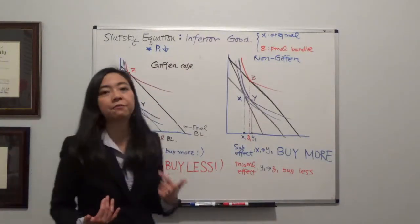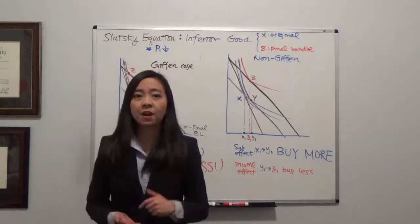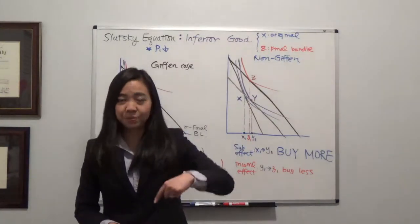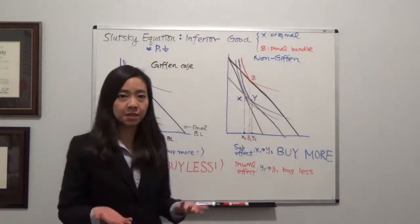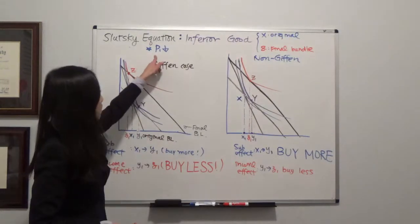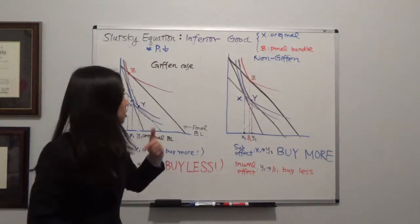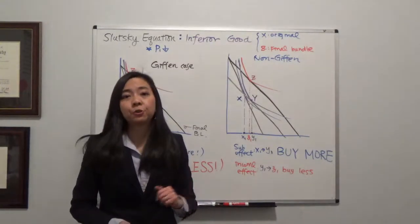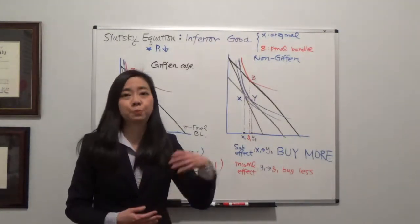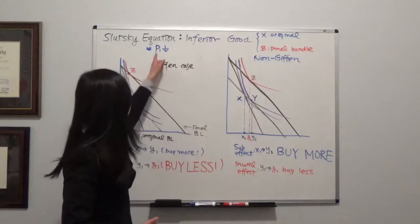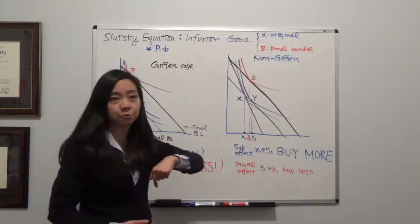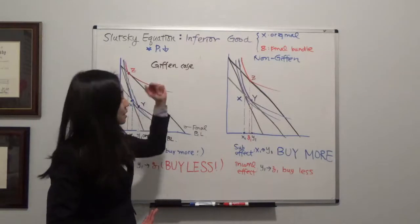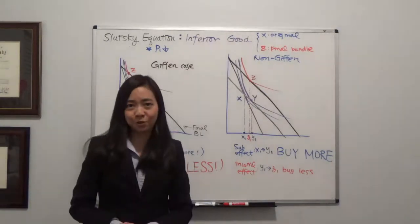We know that the substitution effect will always follow the law of demand. Meaning, if the price of the good goes down, then the substitution effect is going to tell you: the price of good one has gone down, so good one is now relatively cheaper, and therefore you should buy more good one to replace good two. So when the price of good one goes down, you buy more good one, and therefore the substitution effect will always follow the law of demand.